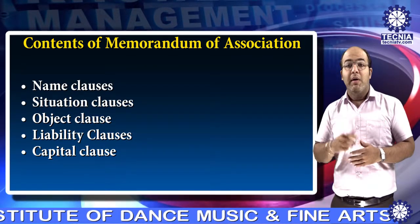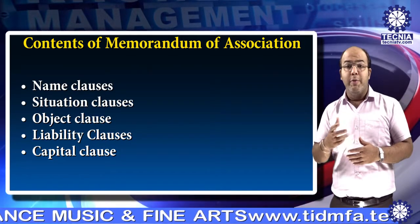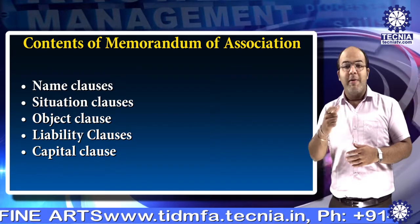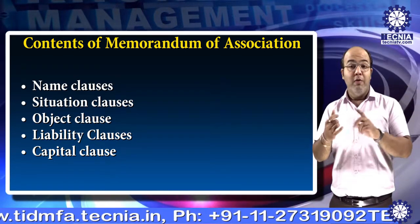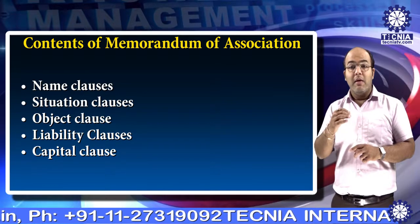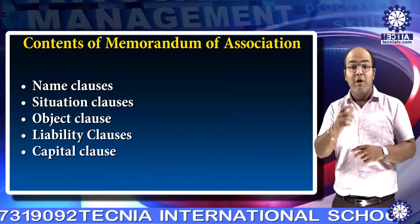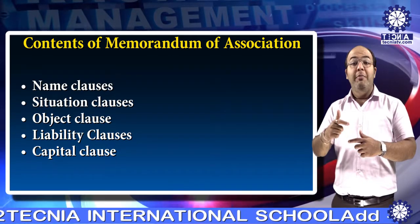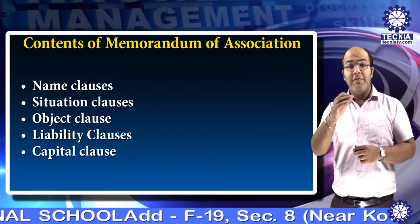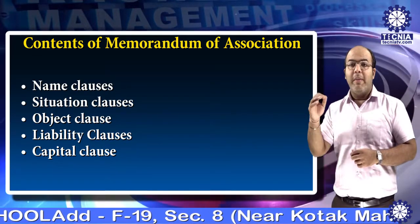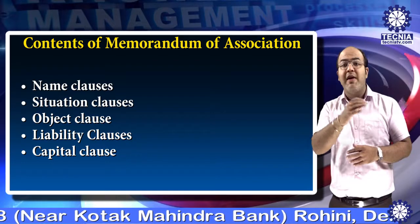The third clause is the object clause. This clause defines the objective with which the company is formed. A company is not legally entitled to do any business other than that specified in the object clause. The fourth one is the liability clause. This clause limits the liability of the members to the amount unpaid on the shares held by them.